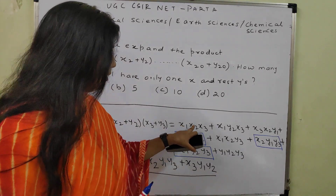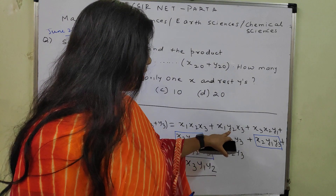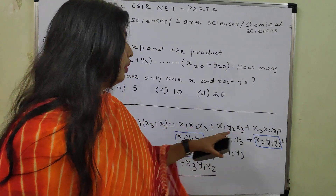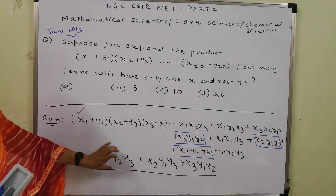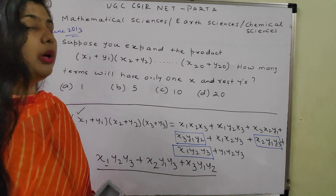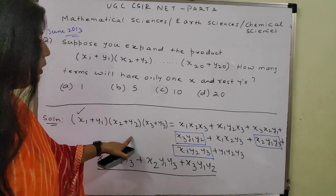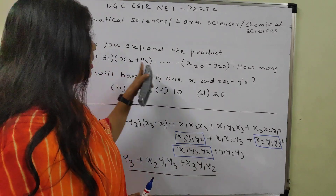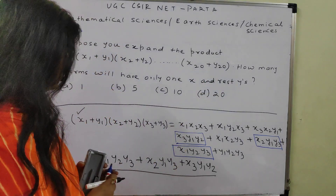The remaining terms contain all three x's, or two x's and one y, and so on. So only 3 terms will have exactly one x and the remaining two y's. Using this example, I am trying to make it clear what will happen when we take the product up to x20 + y20.